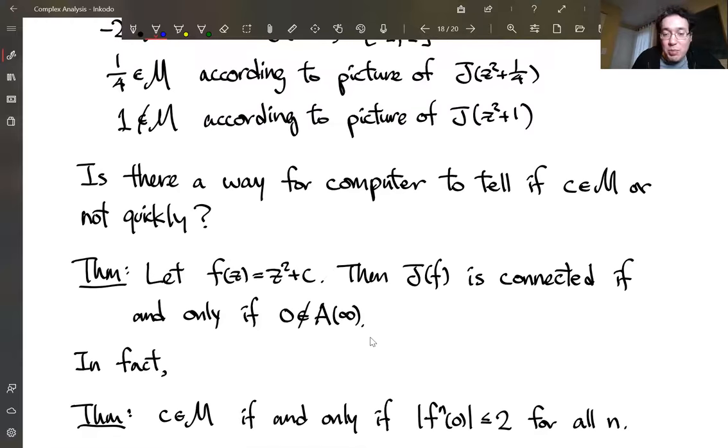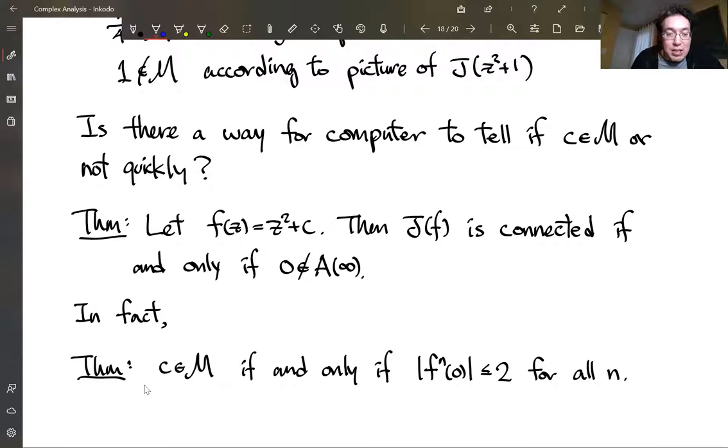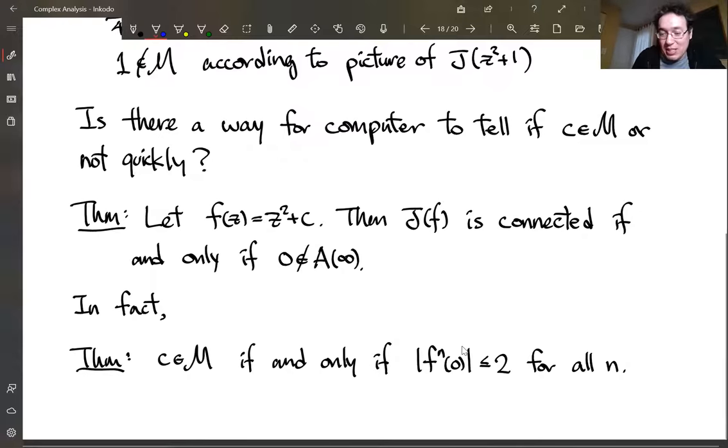In fact, you can be a little bit more specific. It's in the Mandelbrot set if and only if the iterates stay less than or equal to two for all n. So the radius of two is the point of no return for Mandelbrot set. So pick any complex number c. You just have to check the orbit for the zero, starting with the zero value z. And then you run it until, if it gets bigger than two, then it's going to blow up to infinity. If it stays less than or equal to two for a long time, then it's in the Mandelbrot set, probably.